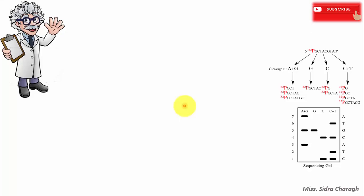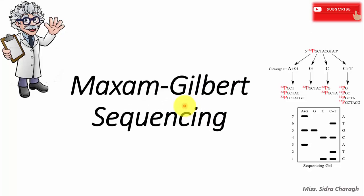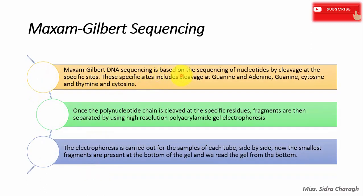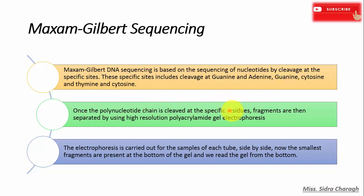In this lecture we will discuss Maxim-Gilbert sequencing. The Maxim-Gilbert sequencing method was first developed by Maxim and Gilbert in 1976 to 1977. Maxim-Gilbert sequencing is based on the sequencing of nucleotides by cleavage at specific sites. These specific sites include cleavage at guanine, adenine, guanine, cytosine, and thymine, and cytosine.